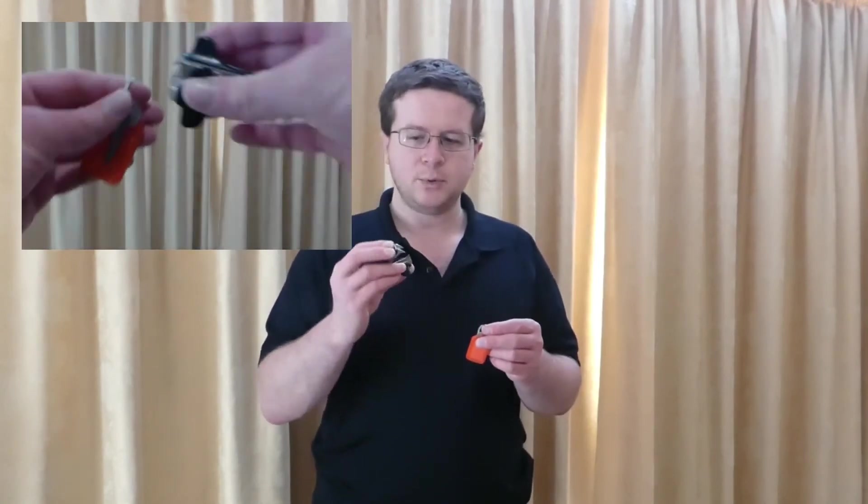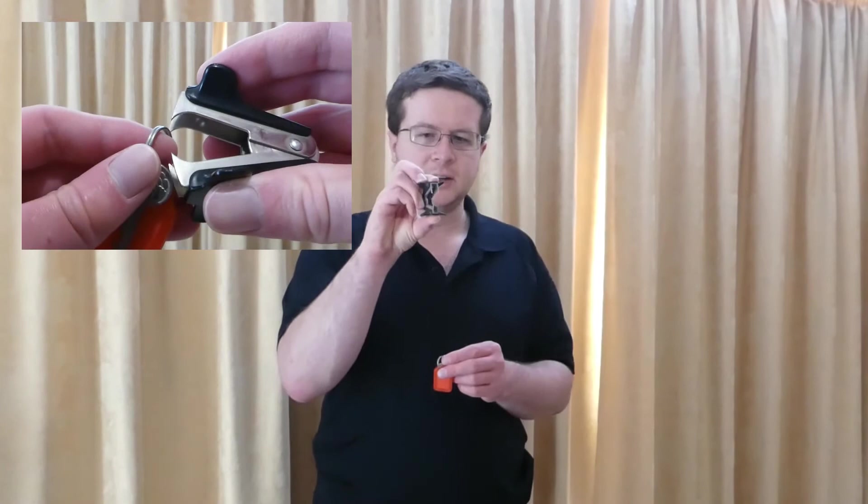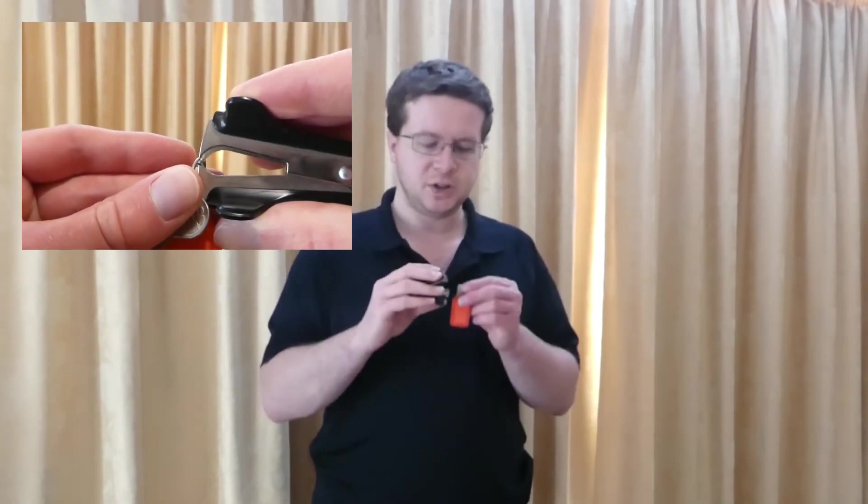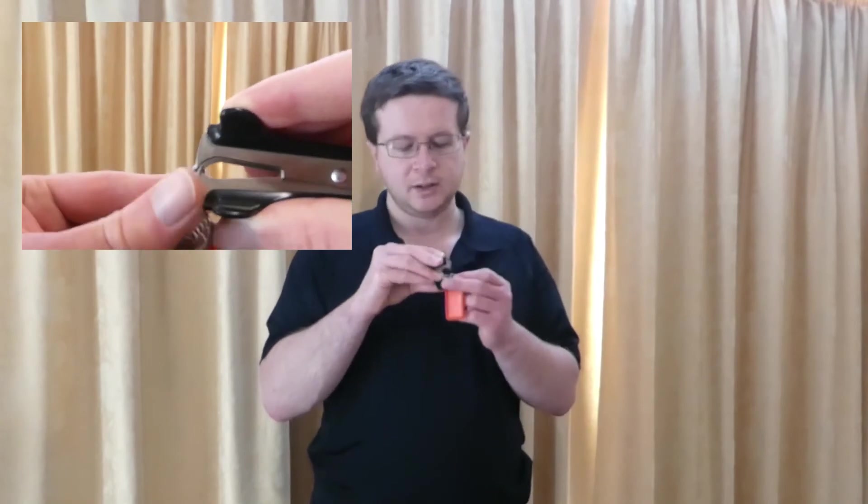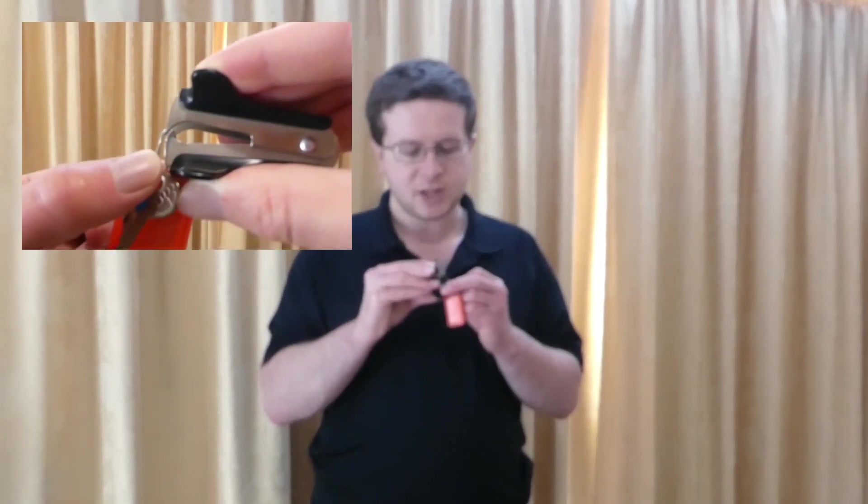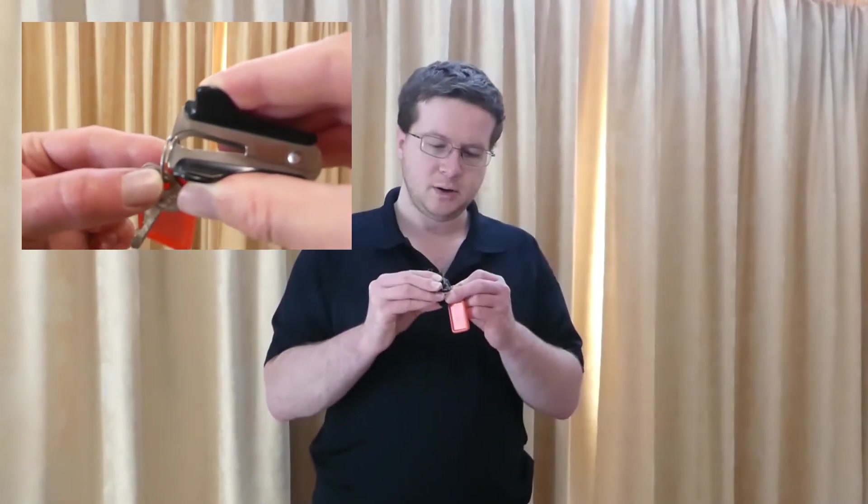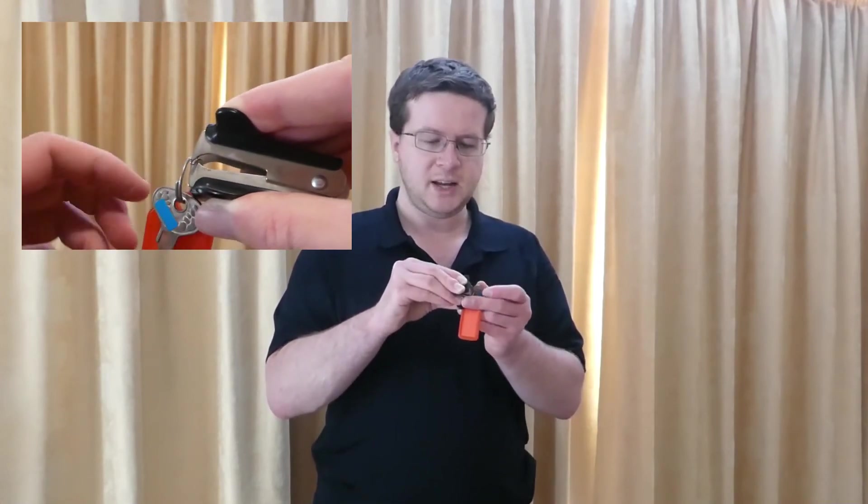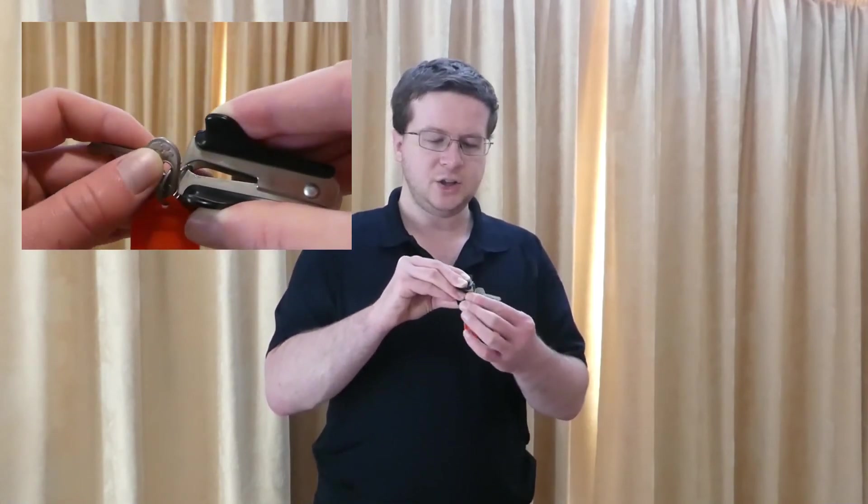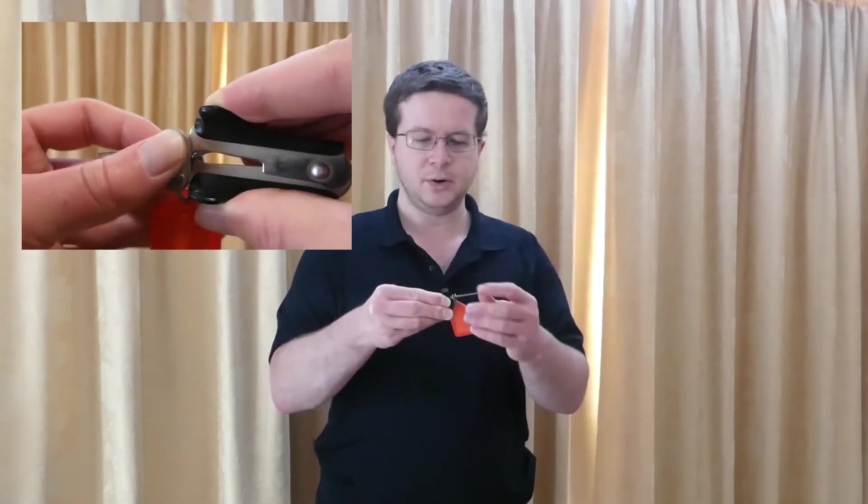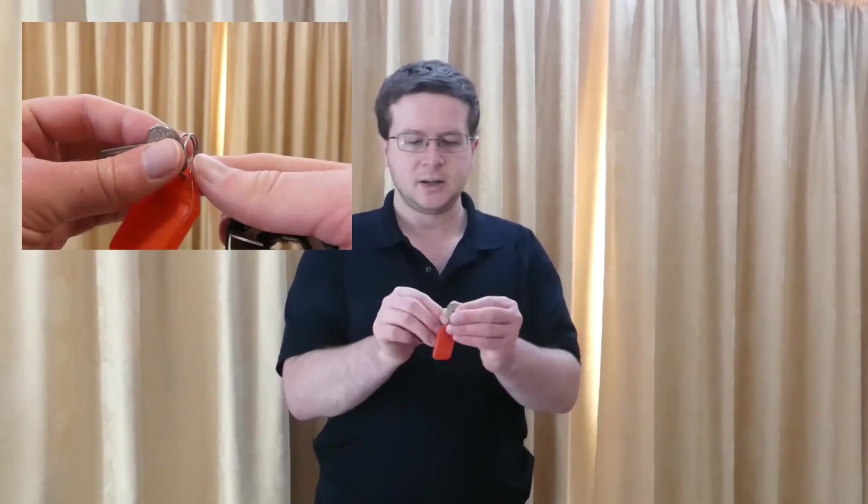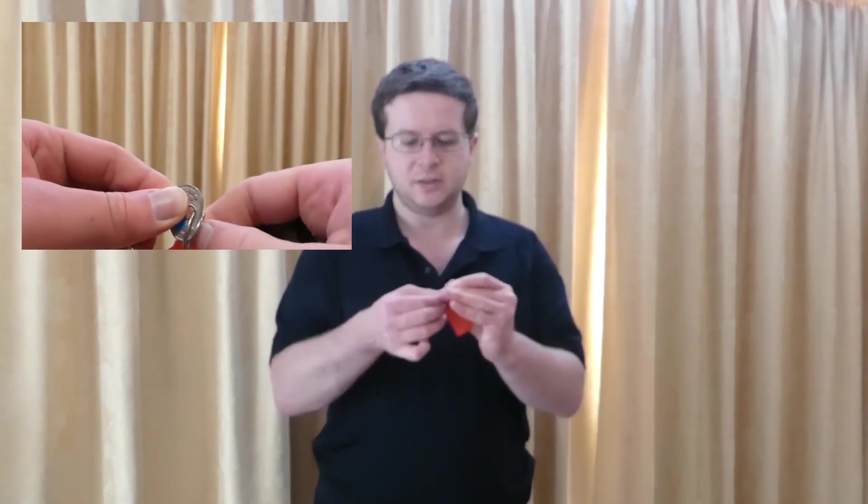Simply take the staple remover with the closest prongs at the bottom and the widest ones at the top. Carefully get them just into the separation point, push the other ones in, bring the key up, and just rotate the ring through until the key is in the ring, then release and twist the key off.